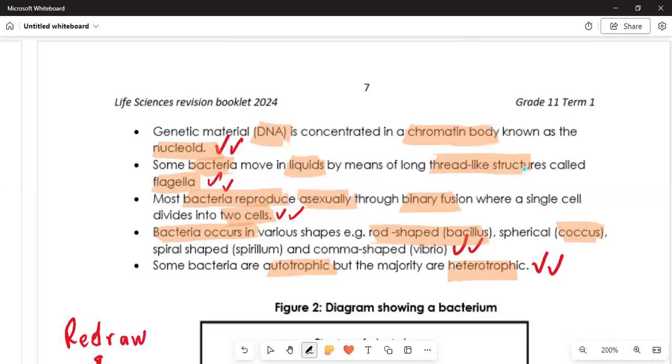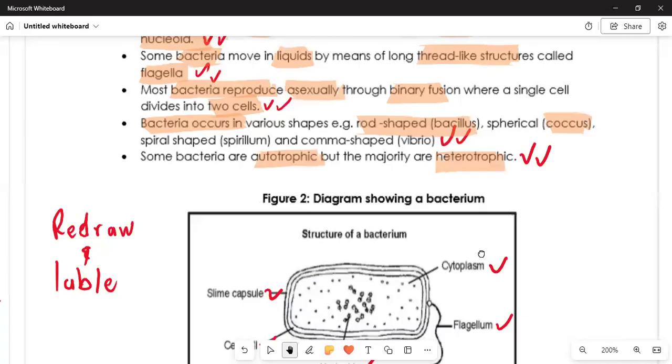Bacteria occur in various shapes. It can be rod-shaped, called bacillus. The spherical, which is called coccus. The spiral-shaped, which is called spirillum. And the comma-shaped, which is called vibrio. So these are the technical terminologies that are used to differentiate the different shapes of bacteria.